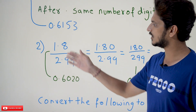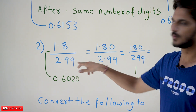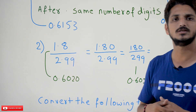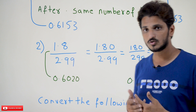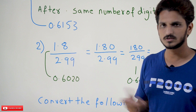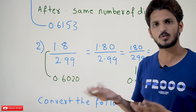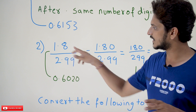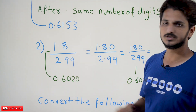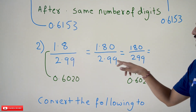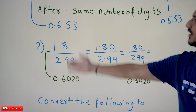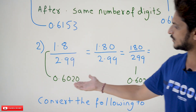A slightly different case: 1.8 divided by 2.99. After the dot, 1.8 has one digit and 2.99 has two digits. We need to equate the digits after the decimal point. Placing a zero after 8 gives 1.80, which has the same value as 1.8 — any number of trailing zeros doesn't change the value. So we write 1.80/2.99 = 180/299. Simplifying gives approximately 0.6020.